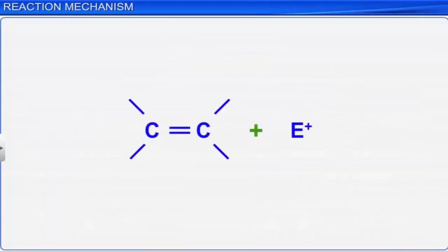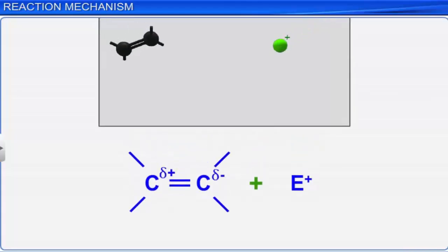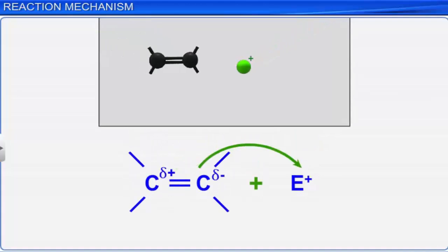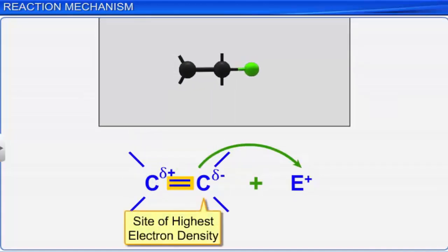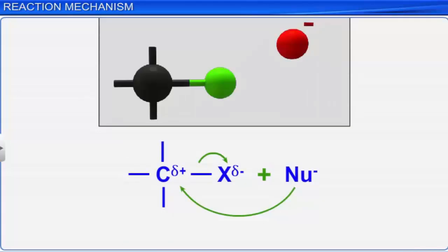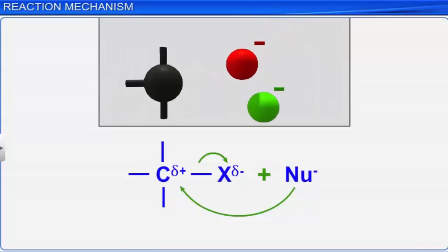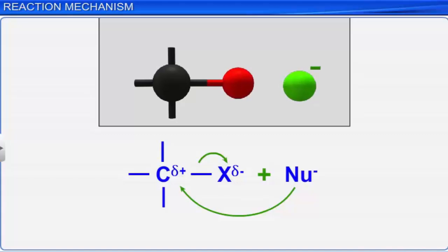A reaction initiated by an electrophile is called an electrophilic reaction. Electrophiles always attack the substrate molecule at the site of maximum electron density.